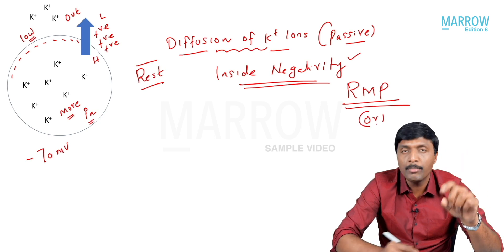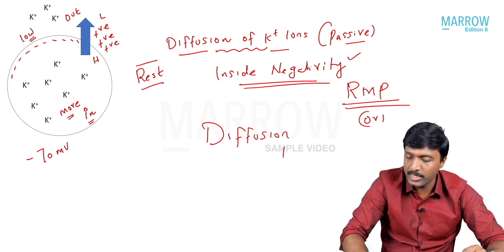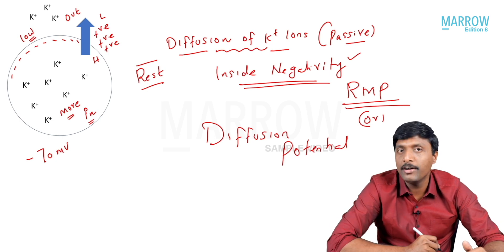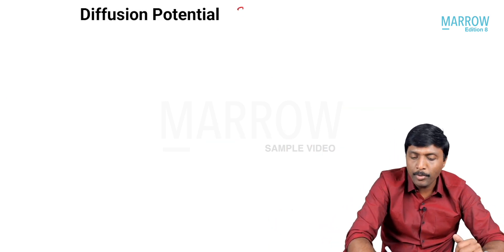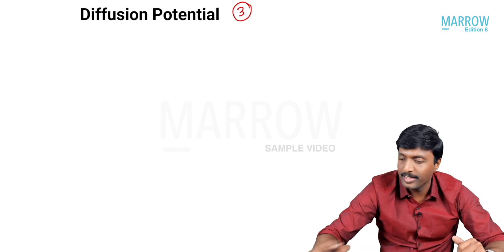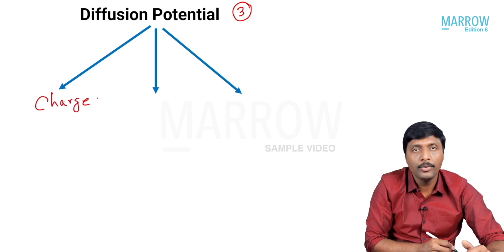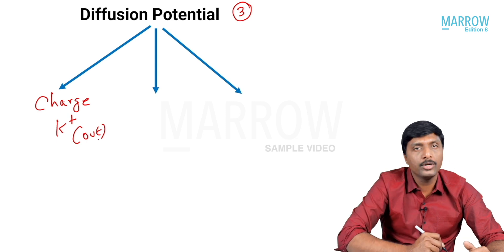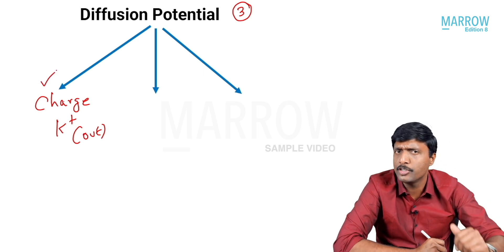The basic cause for resting membrane potential is passive diffusion of potassium ions. Because it is exclusively due to diffusion of potassium, it can also be called diffusion potential. Resting membrane potential is also called diffusion potential. What three important things determine our diffusion potential? The first one is the concept of charge: potassium is positive and moving out, which is why negativity accumulates inside. It depends upon the charge of potassium — positive, moving out, negativity accumulating inside.